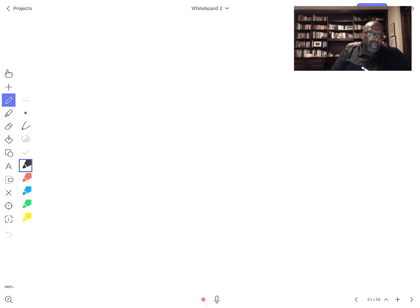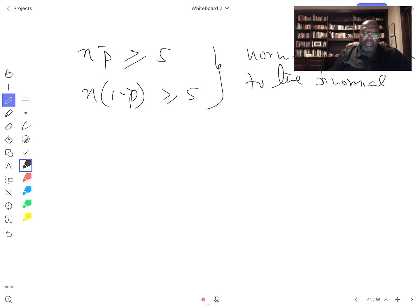Those conditions are n times p bar is greater than or equal to 5, and n times (1 minus p bar) is also greater than or equal to 5. The reason why I have p bar now in this case is because I don't know p. If we have that, then we could use a normal approximation to the binomial.